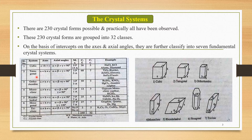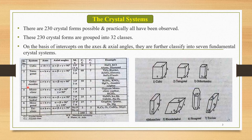The second system is the tetragonal system, with axes a = b ≠ c and axial angles α = β = γ = 90°. It has 5 planes of symmetry, 5 axes of symmetry, 68 crystal forms, and 7 crystal classes. Important examples are titanium oxide (rutile structure), zirconium (zircon), and cassiterite (stannous oxide).